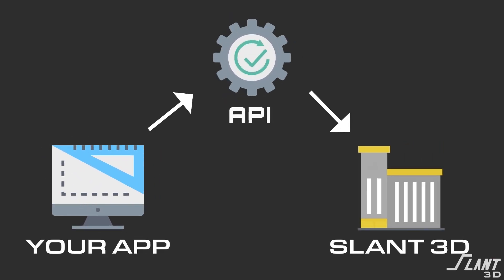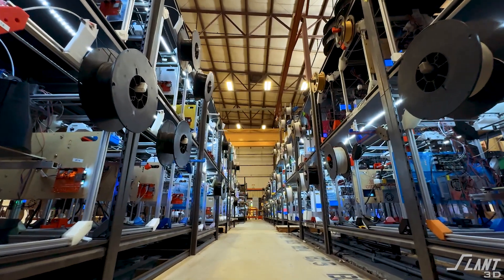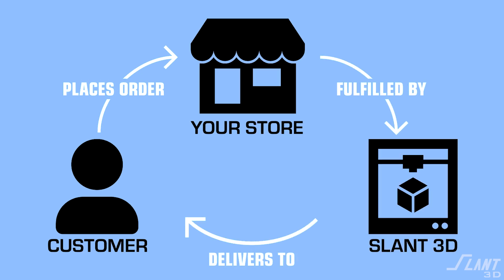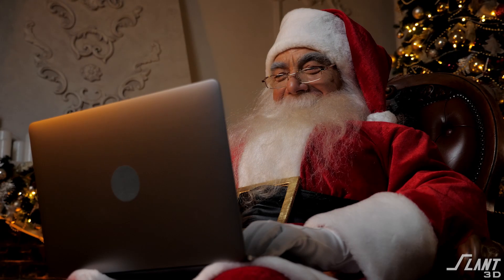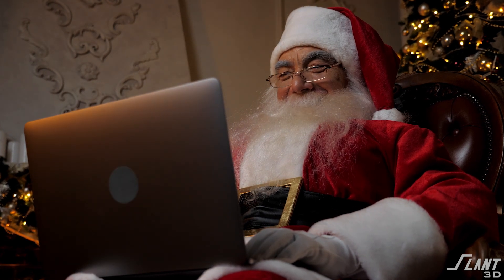The API is going to allow developers to build apps on top of our print farms — apps that connect to our print farms, like our own Etsy app and print-on-demand application, where they can access our API to send a 3D model to us and have that model sliced, printed, and shipped to a final customer without any interference or interaction from that developer. They can build an application on a print farm without having to know anything about a print farm.